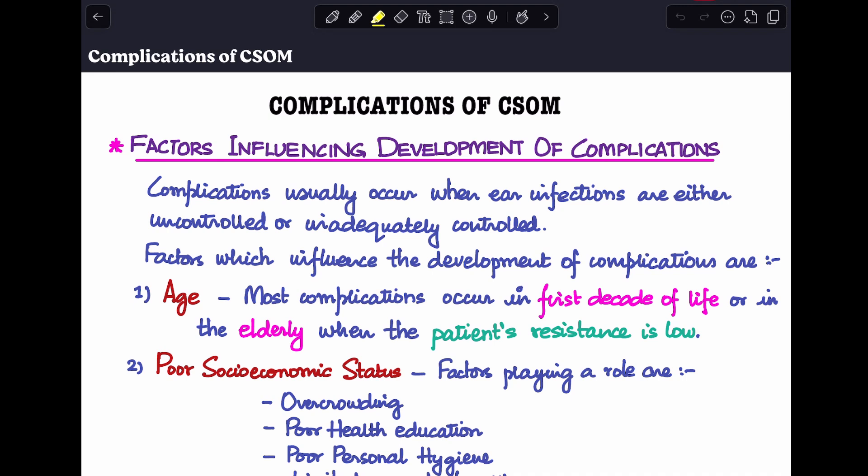Complications usually end up developing when your infections are either uncontrolled or they have been inadequately controlled. In these scenarios, if the following factors are present, they do end up influencing the development of complications. The first one is age. It has been seen that most of the complications occur in the first decade of life or in the elderly.